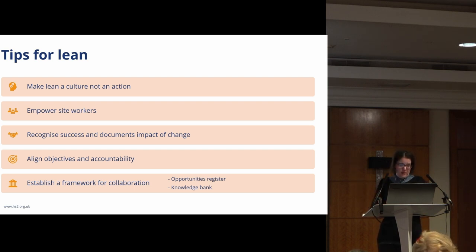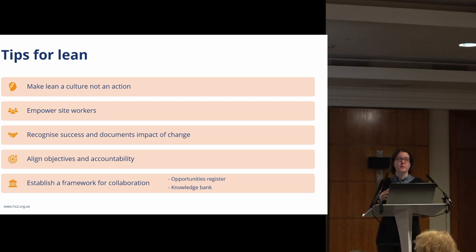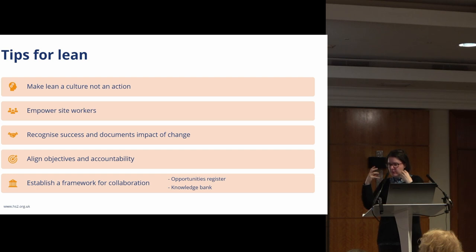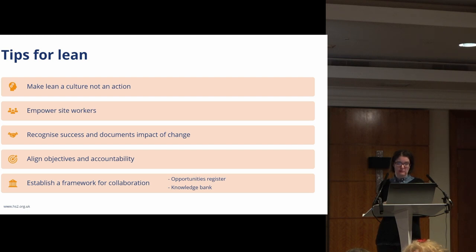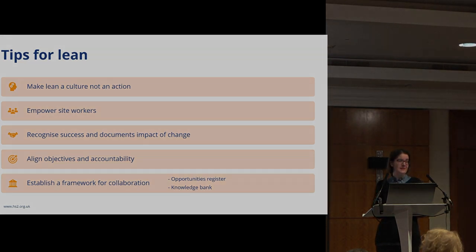The final thing I want to say is about defining your value stream. A value stream is a set of actions which takes place to add value to your customer. It's how you tell the customer what the value is that you are bringing and make sure that you realize that value. It begins with the concept, moves through all the stages of development, and on through delivery and support — the value stream begins and ends with the customer. So again, it's that outcome-focused approach: what are you aiming to achieve? That is lean, and a little bit about how it applies to heritage. Thanks.